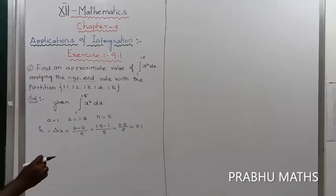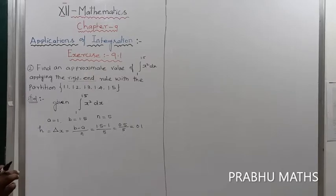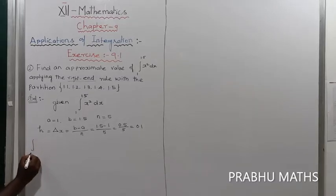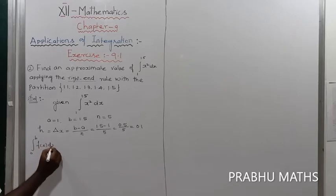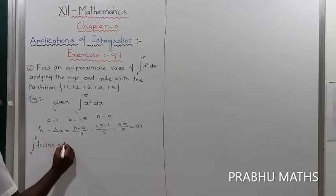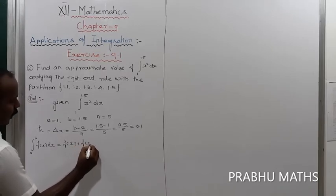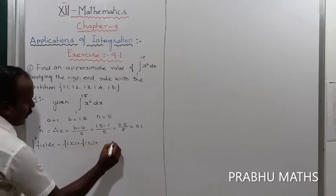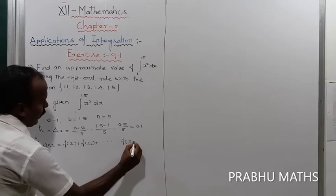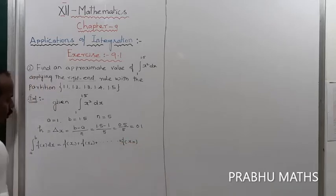So this one, right end rule. Right end rule starting from f of x1 to f of x5. Integral of a to b f of x dx equals f of x1 plus f of x2 and so on, plus f of xn.